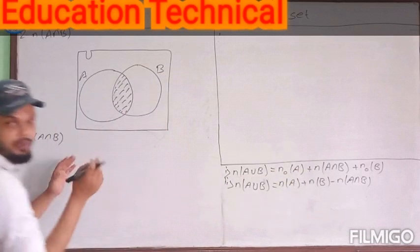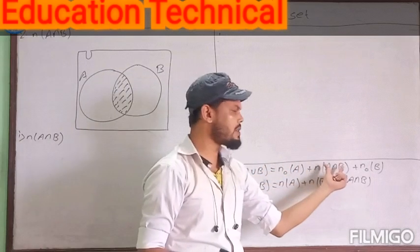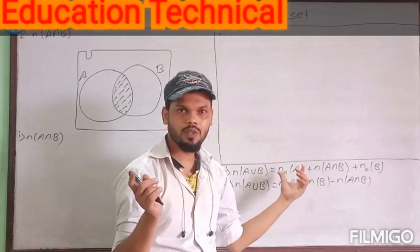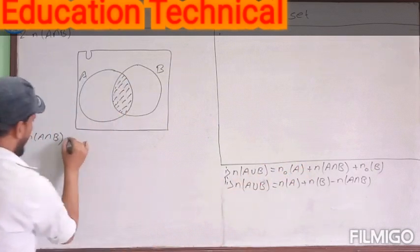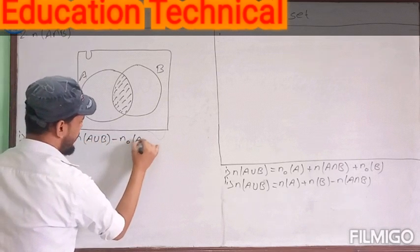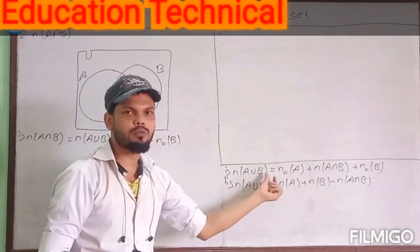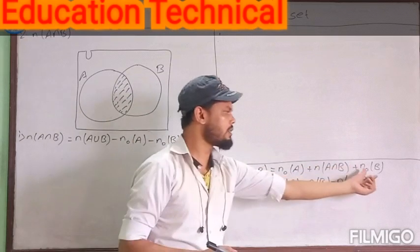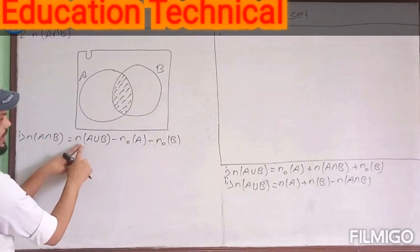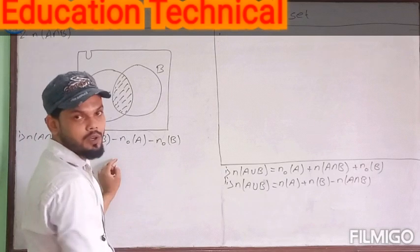From formula one, solving for N(A ∩ B): N(A ∩ B) = N(A ∪ B) − N(A only) − N(B only). From formula two, rearranging: N(A ∩ B) = N(A) + N(B) − N(A ∪ B). These are the two formulas for N(A ∩ B), and we use them according to the given condition of the question.